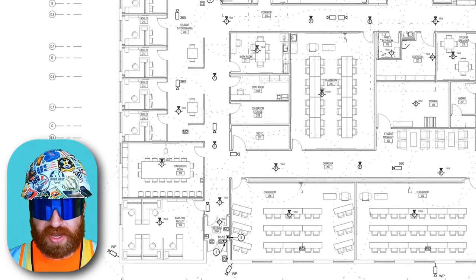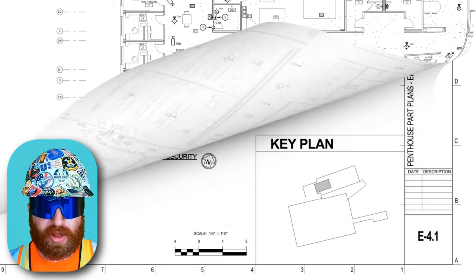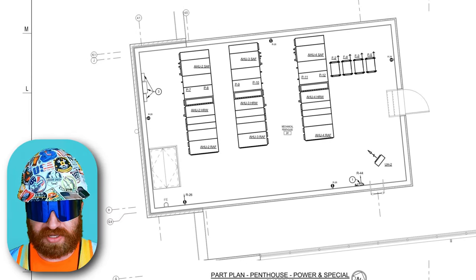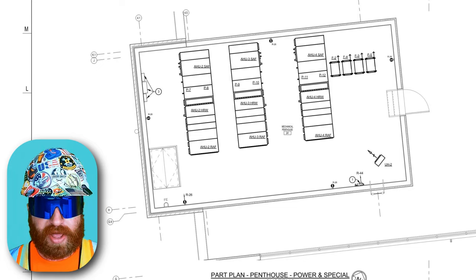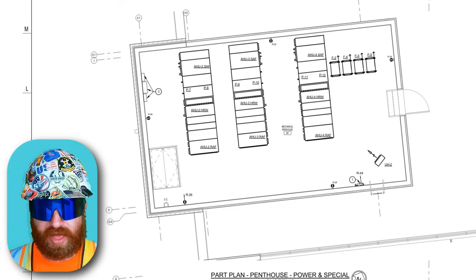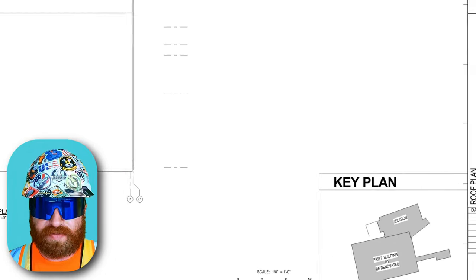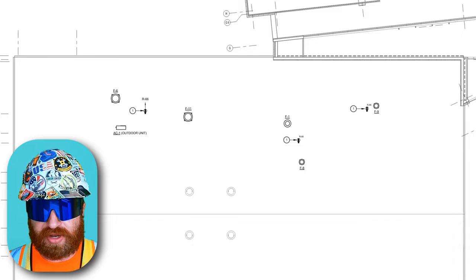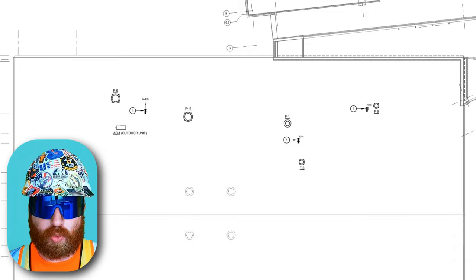The rest of that page has the same information repeated throughout. Moving forward to E4.1, penthouse part plans — this shows mechanical equipment in these spaces to better understand power requirements for that equipment. Then E4.2 is the roof plan, showing mechanical equipment that sits on the roof, which tells the electrician they'll need to run power through the roof assembly to feed this rooftop equipment.